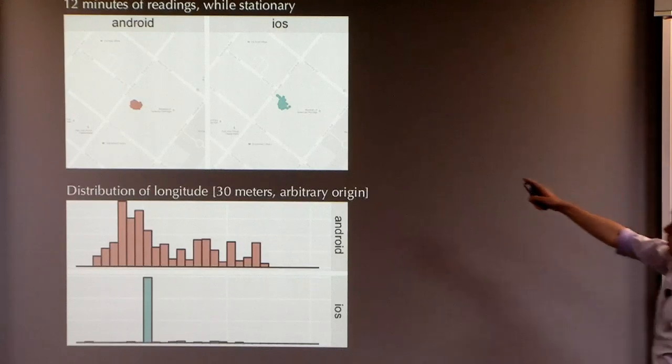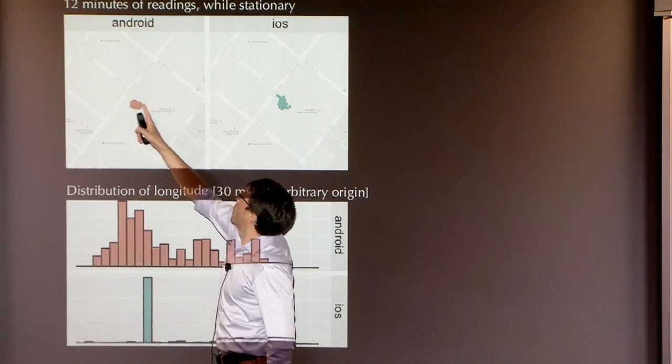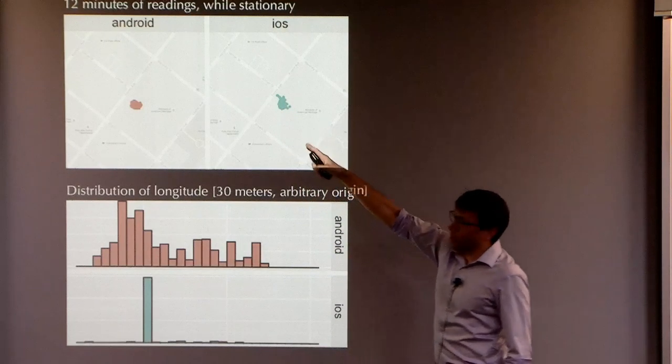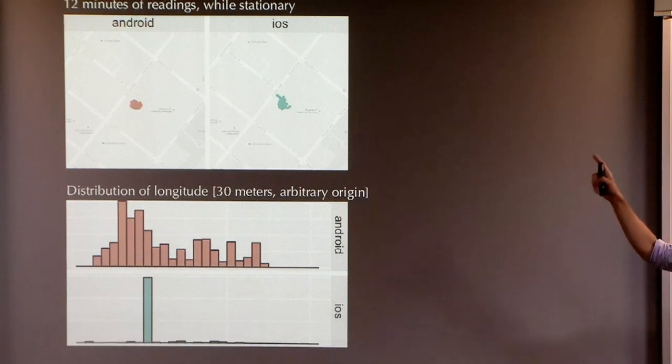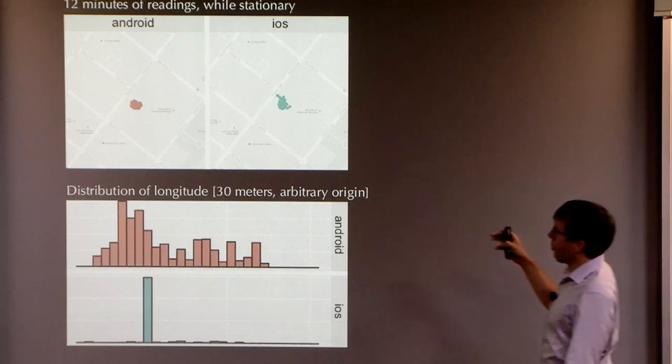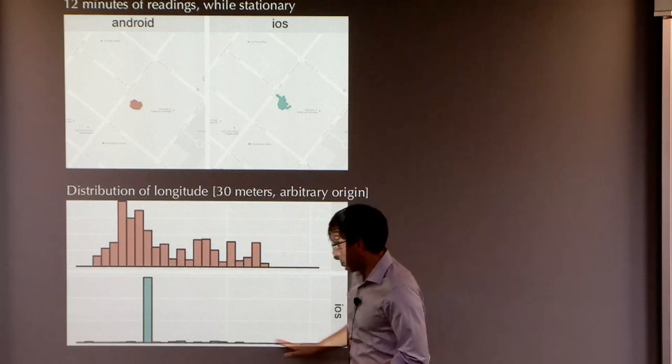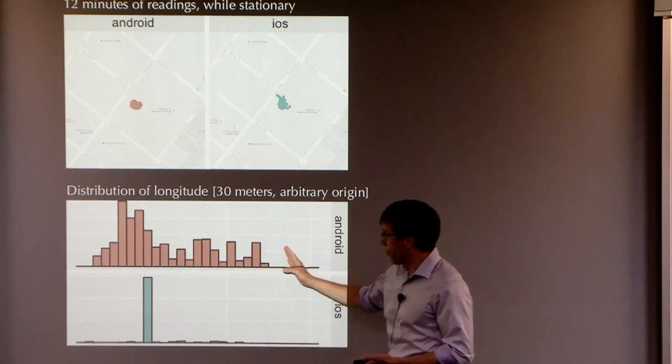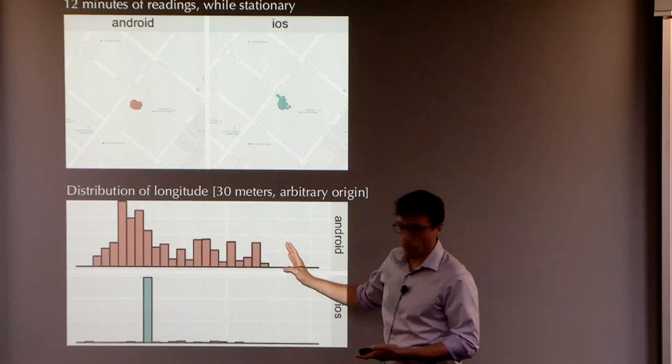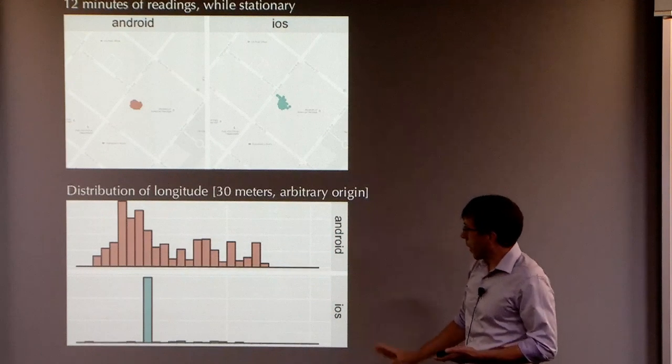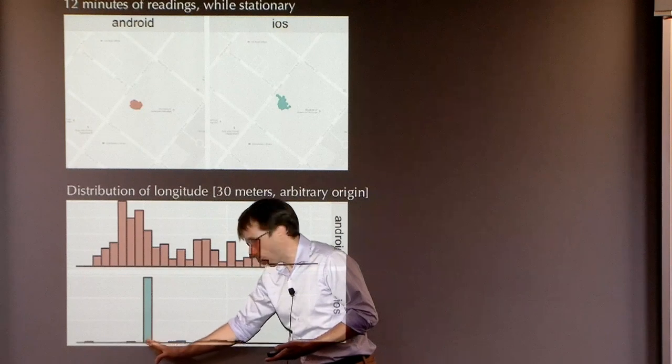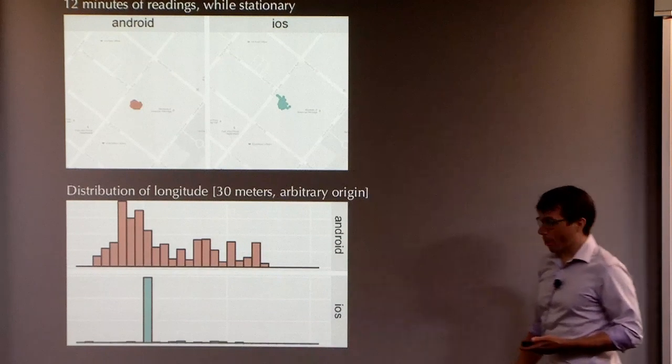Here's another experiment I did. I was sitting in my flat around about here. And I sat there and had them both on for 12 minutes. And I recorded all the GPS samples. I think frequency once every 10 seconds or 30 seconds or whatever it was. And here I'm just plotting longitude, reported longitude. The full x-axis is a range of 30 meters. And this is a histogram of the longitude readings that the Android gave. And this is a histogram of longitude readings that iOS gave.